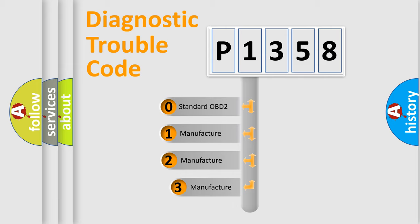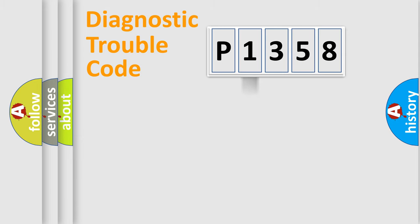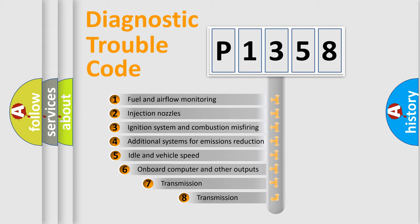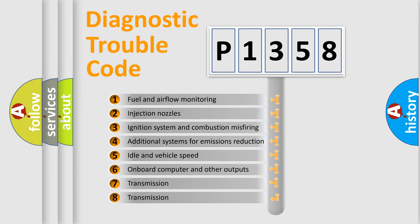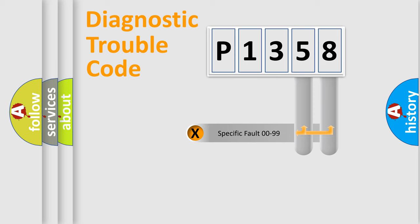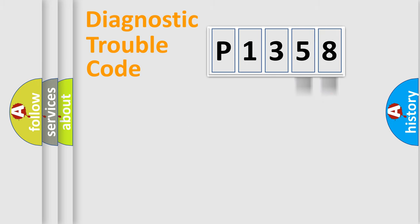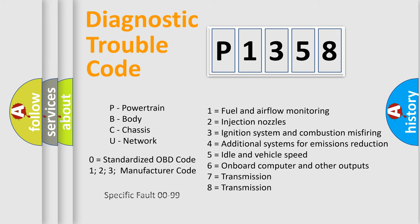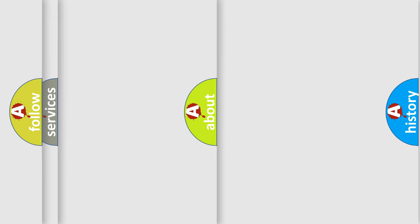If the second character is expressed as zero, it is a standardized error. In the case of numbers 1, 2, or 3, it is a manufacturer-specific error expression. The third character specifies a subset of errors. This distribution is valid only for the standardized DTC code. Only the last two characters define the specific fault of the group, and this division is valid only when the second character is zero.